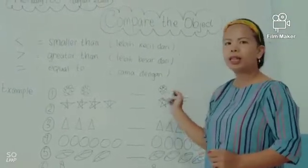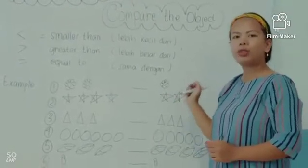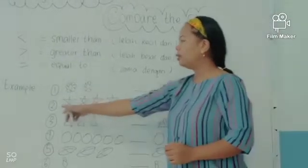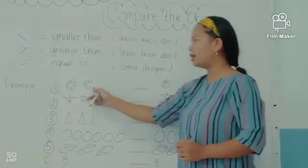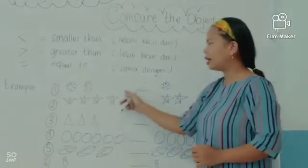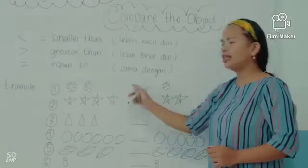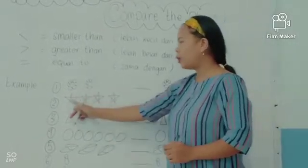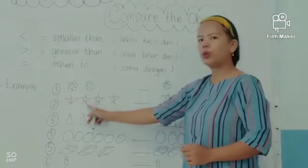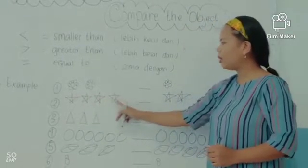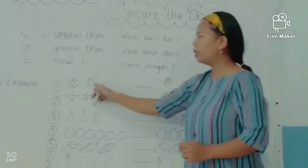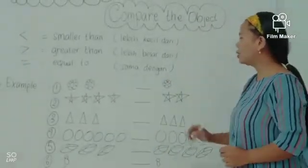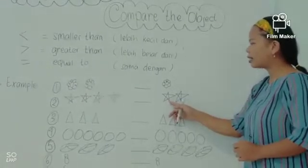It's to determine smaller than, bigger than, or equal to. Now number two — you can see how many stars. Your job here is to count the stars. How many stars in the left side? Let's count together: one, two, three, four. In the left side there are four stars.